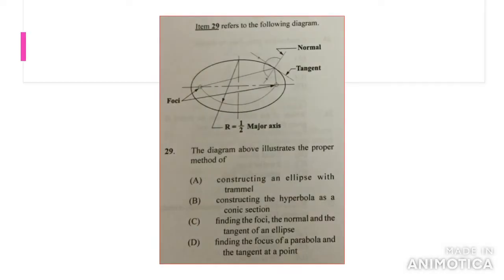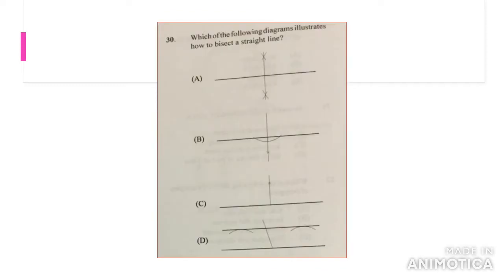This question asks the diagram above illustrates the proper method of constructing an ellipse with trammel, constructing the hyperbola as a conic section, finding the four key points of the normal and tangent of an ellipse, or finding the focus of a parabola. You can see it's C because it's actually labeling the different points. You have the four key points, the tangent, and the normal to the tangent.